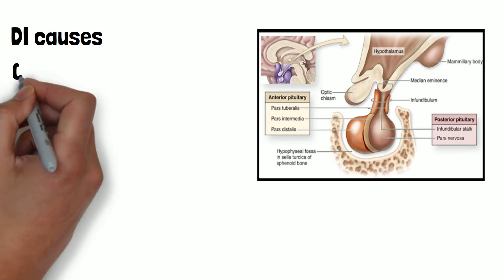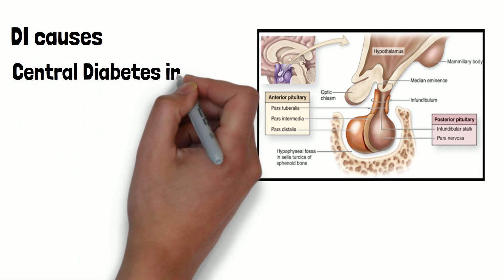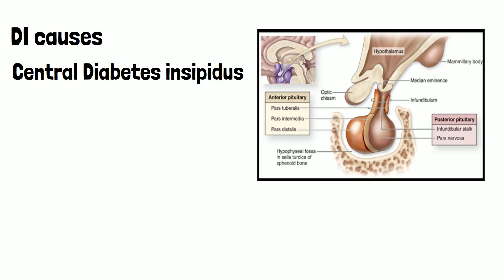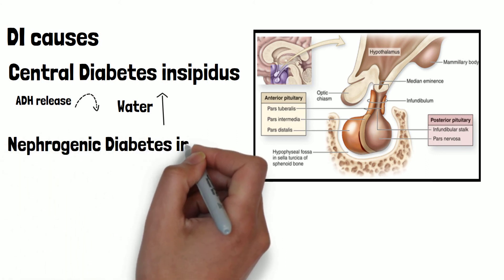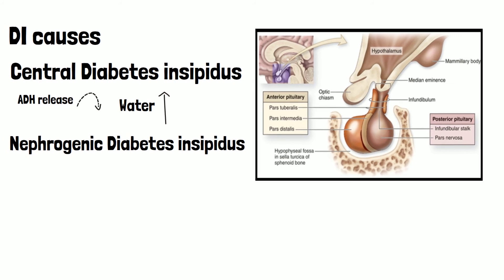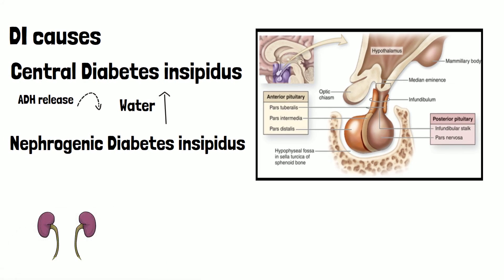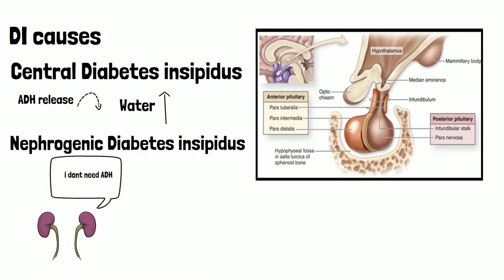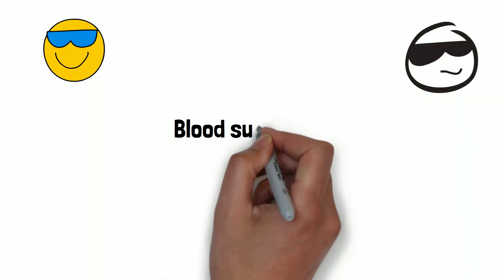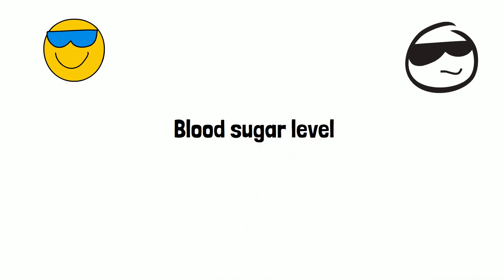Diabetes insipidus results primarily from two etiologies. Central diabetes insipidus results from decreased manufacture or release of ADH from the posterior pituitary, causing the kidneys to release excess water. Nephrogenic diabetes insipidus occurs when the kidneys do not respond to ADH and continue to excrete diluted urine.